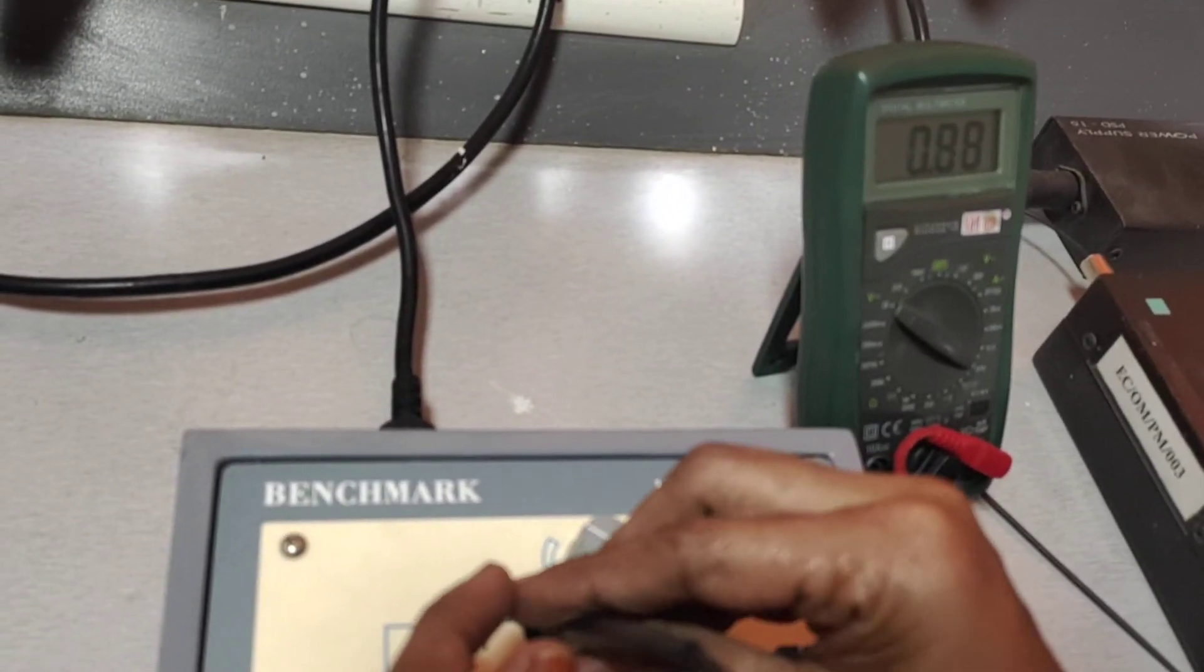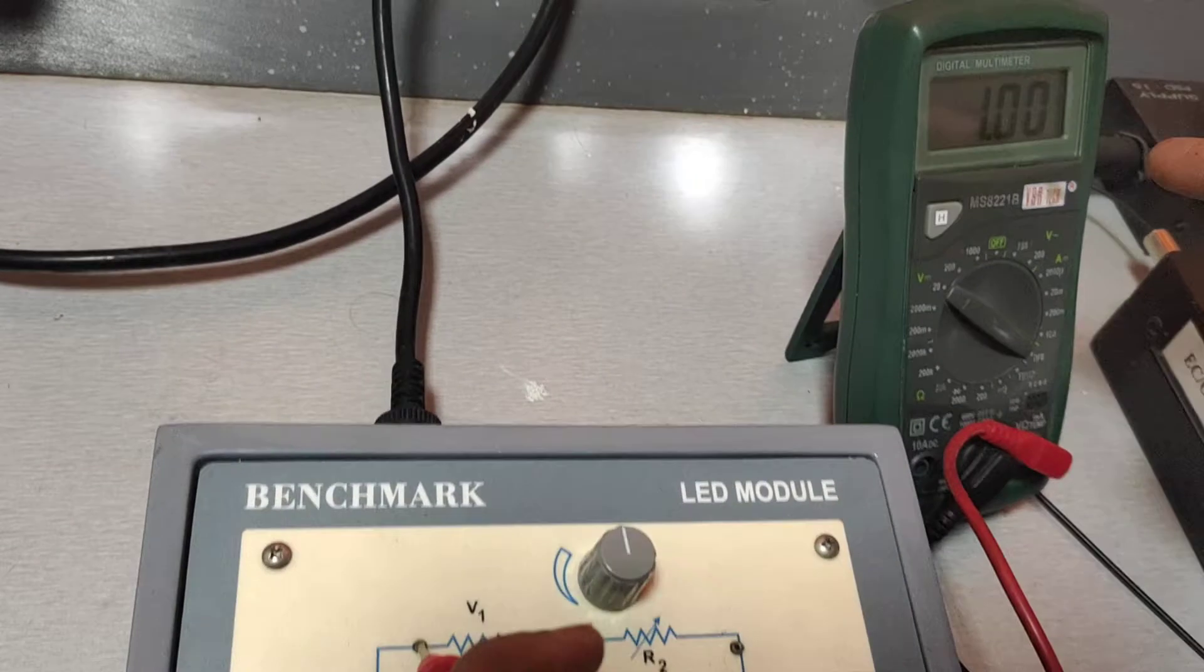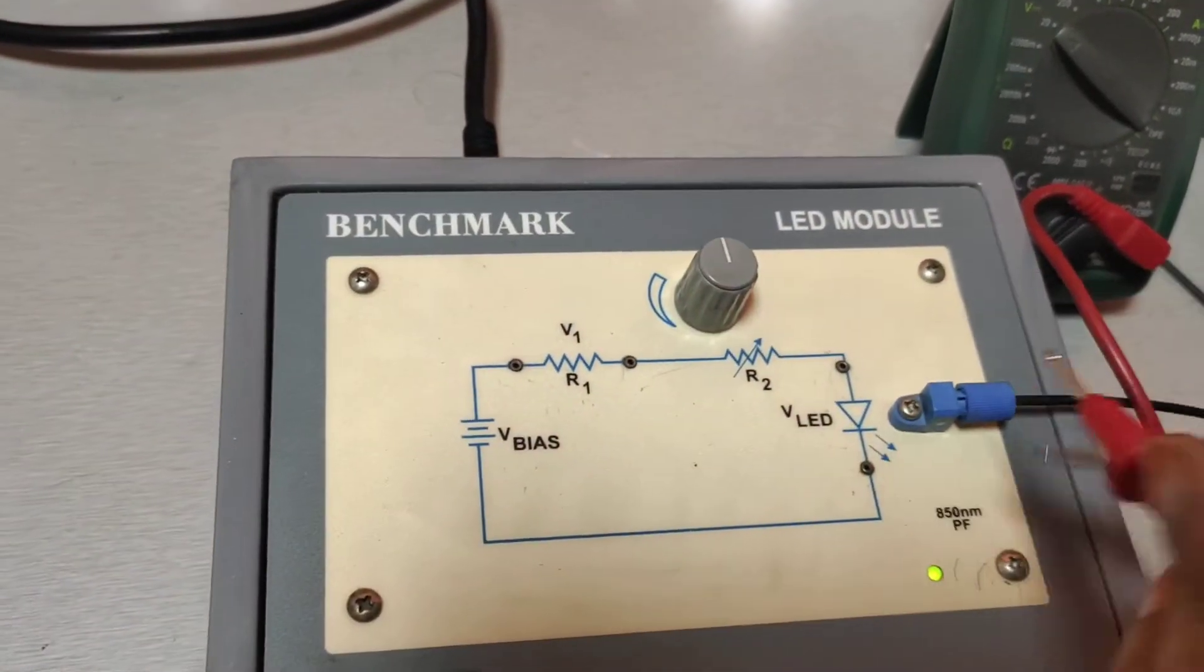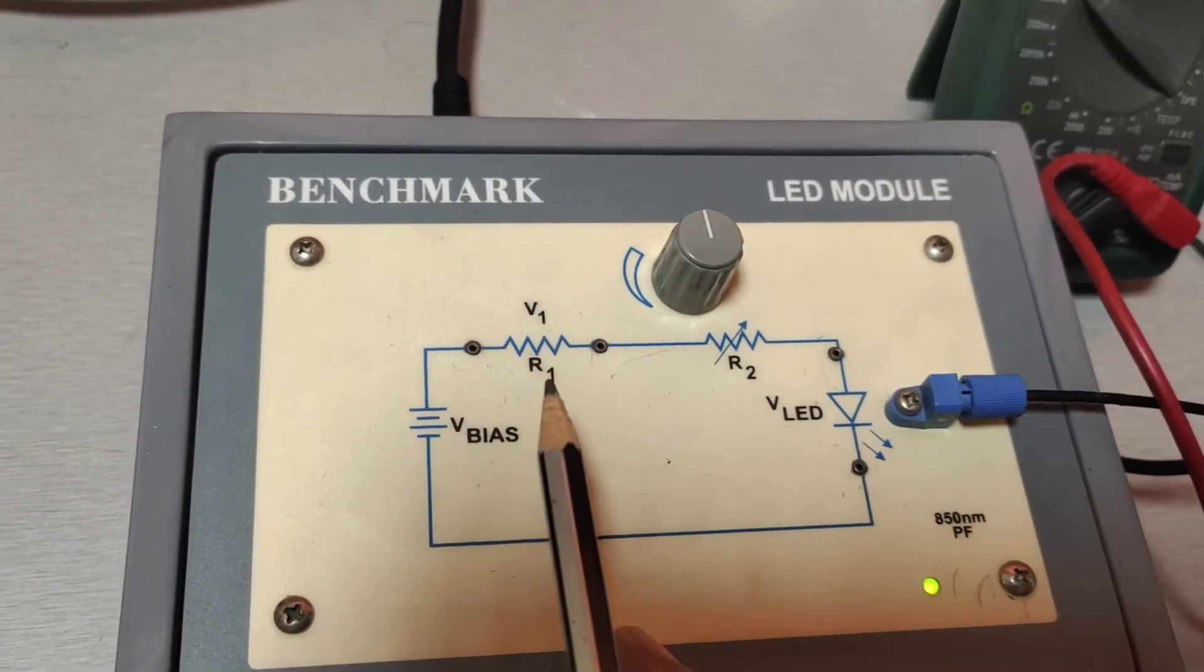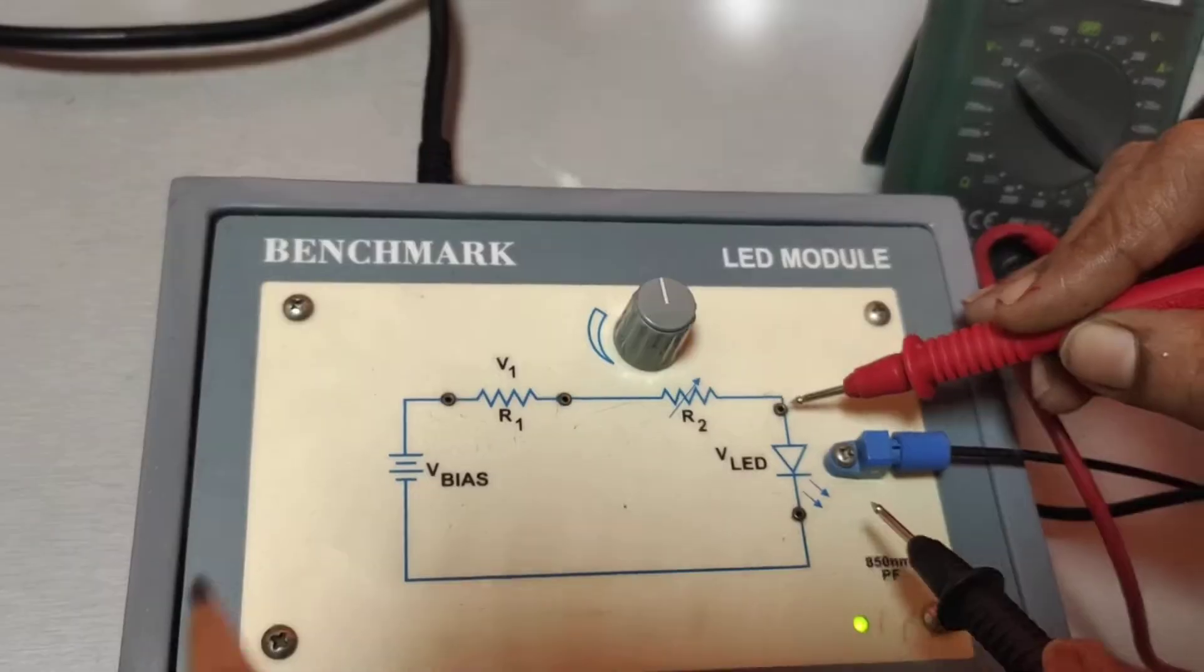Then measure V1 set as 1 volt. Note it down. It is 1 volt. R1 is 180 ohms. So the forward current is calculated as V1 divided by R1.